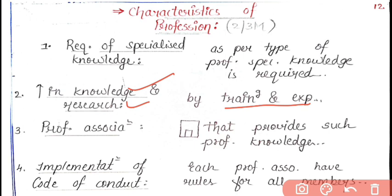The third characteristic is professional association. In whichever profession you are, there will be a special institution that provides you that type of professional knowledge. For example, if you want to become a CA (Chartered Accountant), there is an institution called ICAI — Institute of Chartered Accountants of India — which provides specialized knowledge of CA. Similarly, IIM (Indian Institute of Management) provides specialized knowledge of management. Different institutions provide such specialized knowledge.